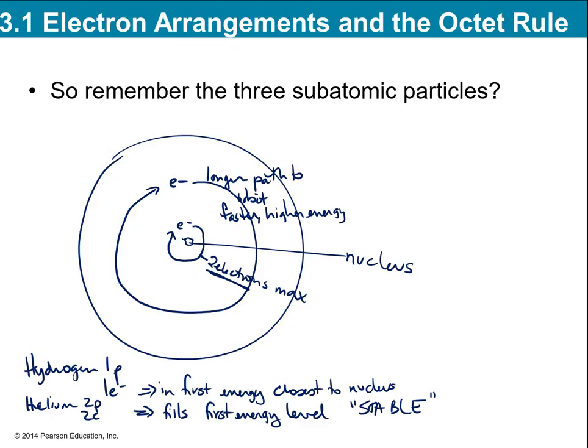Protons, neutrons, and electrons — those three subatomic particles. So protons and neutrons are in the nucleus. We spent more time talking about them because we talked about isotopes and figuring out atomic mass. We kind of just mentioned electrons were outside the nucleus and moved on. So this is really backing up to: why are electrons important?